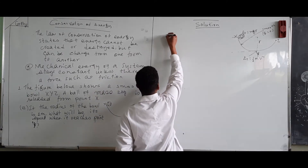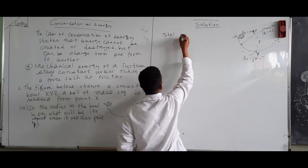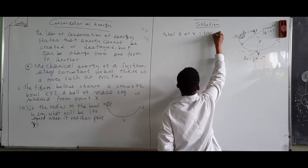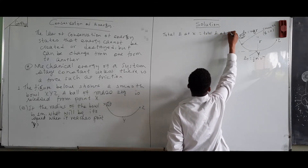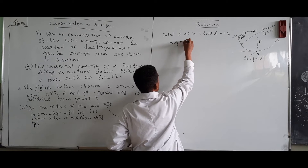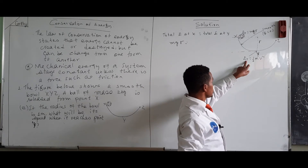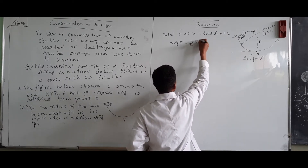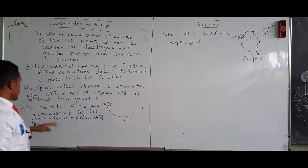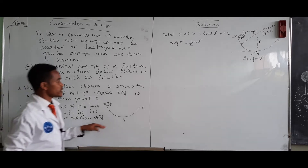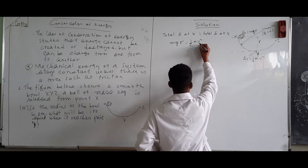So we can say total energy at X equals total energy at Y. Total energy at X is equal to MgR, and total energy at Y is equal to ½mv². We are given radius R equal to 1 meter, and we are going to find the speed V by which it reaches point Y.